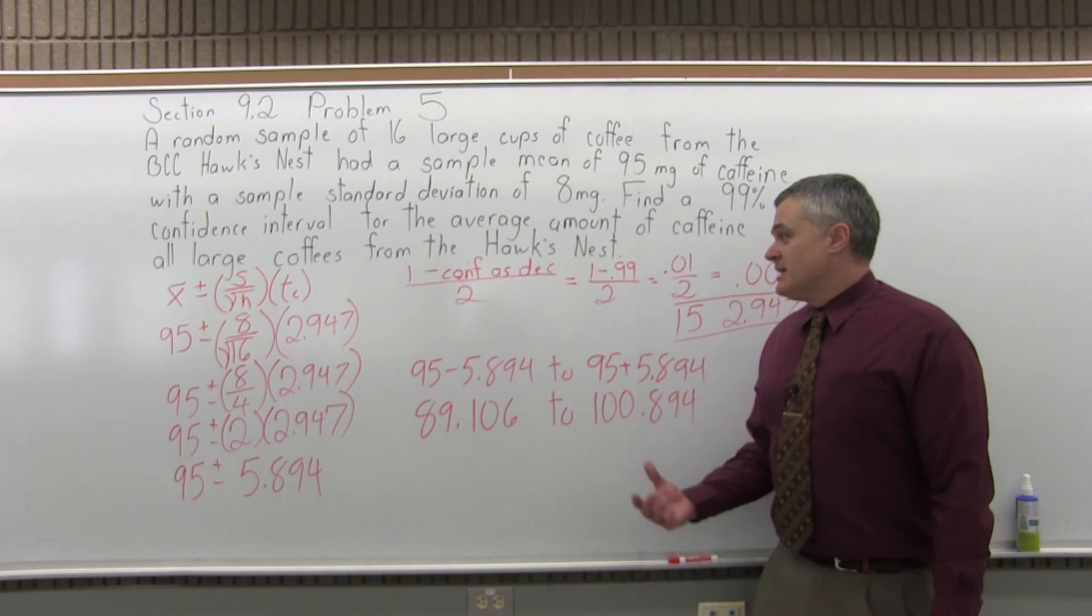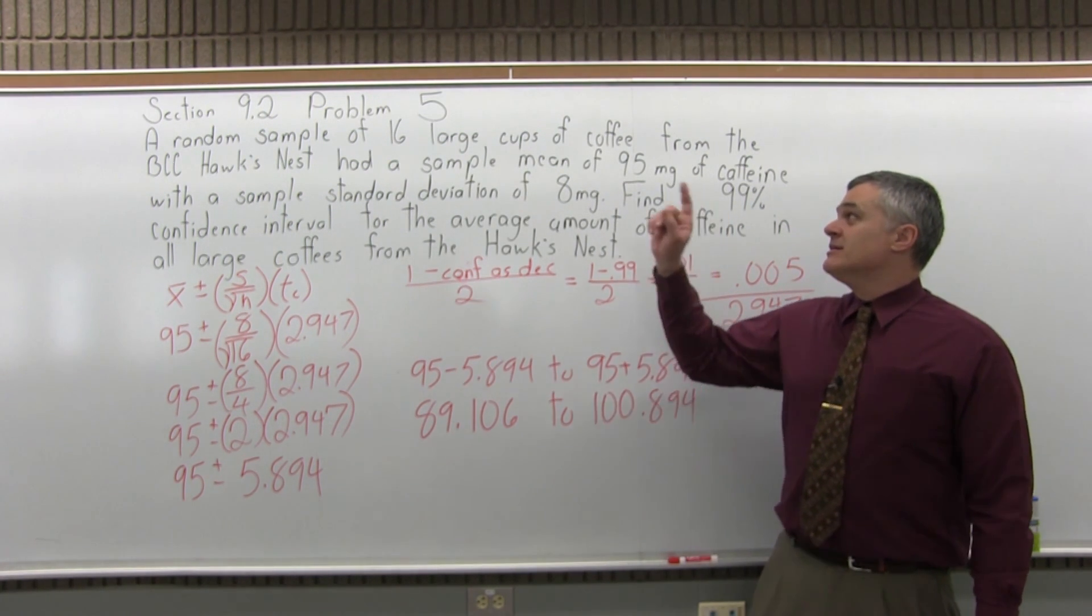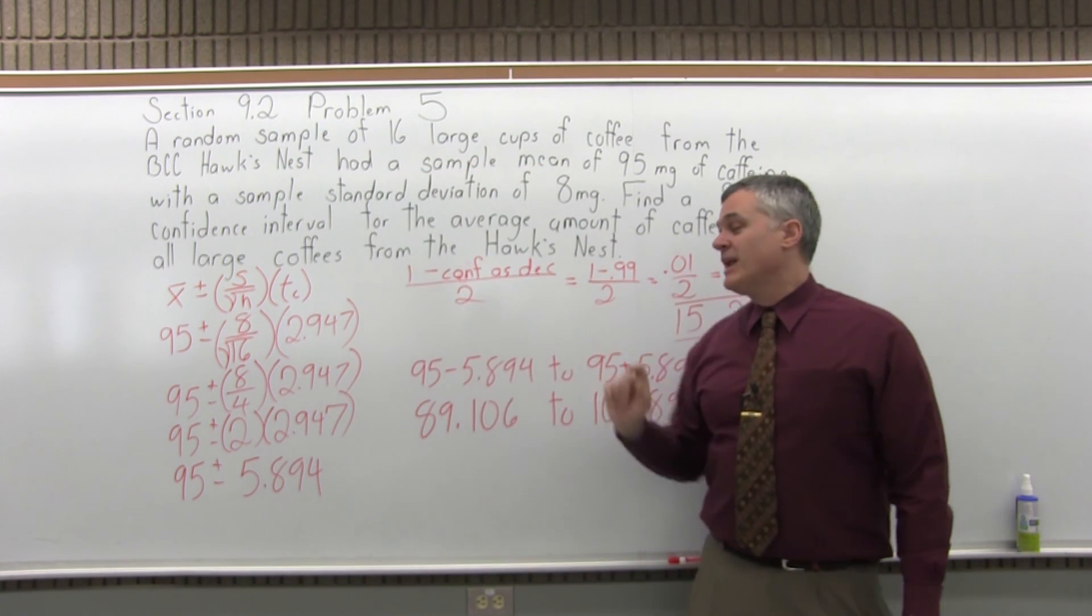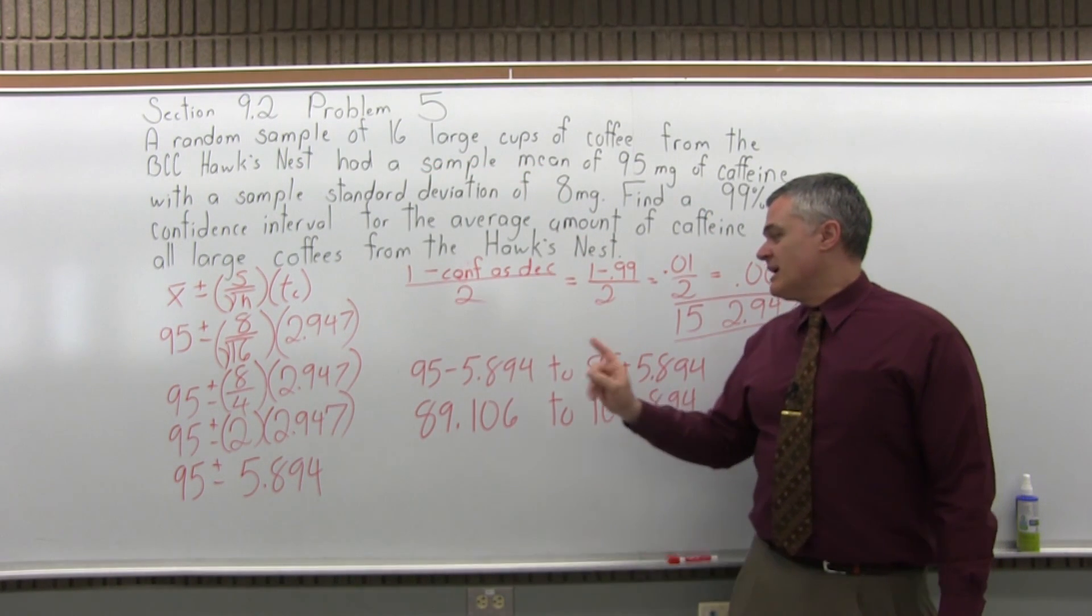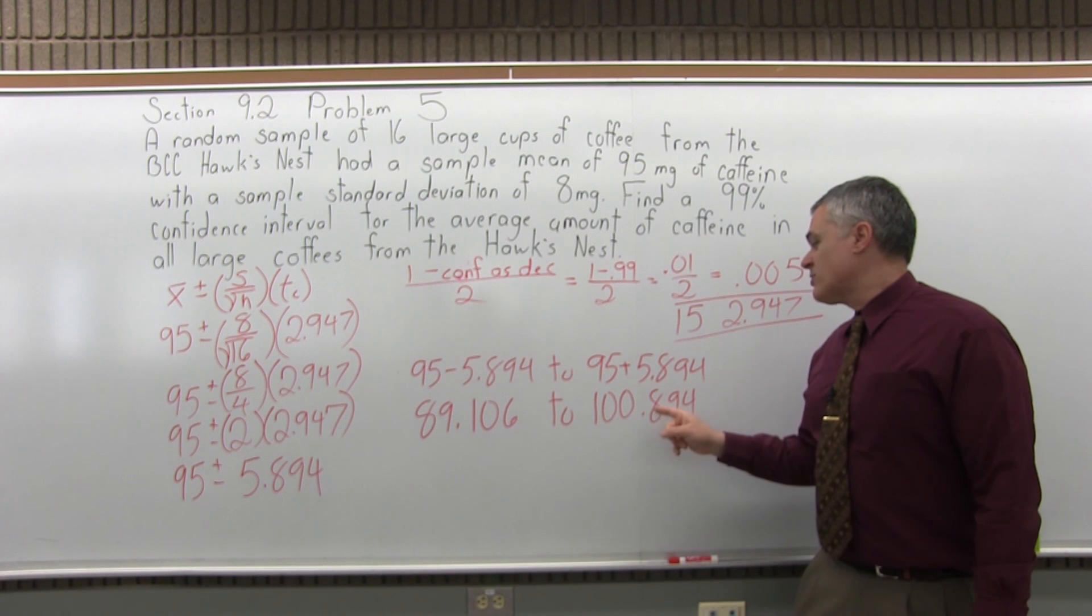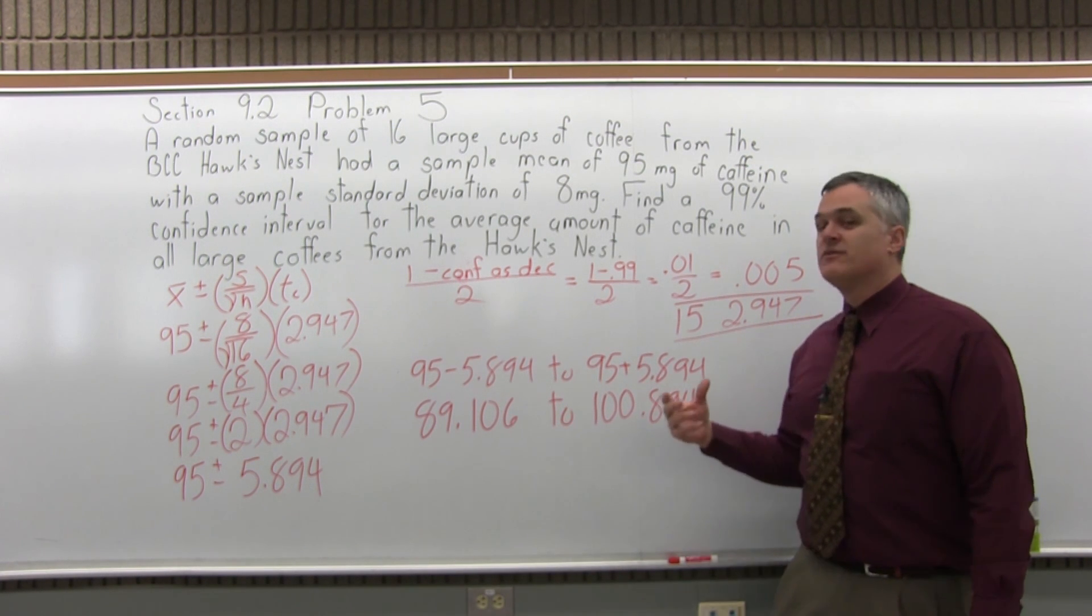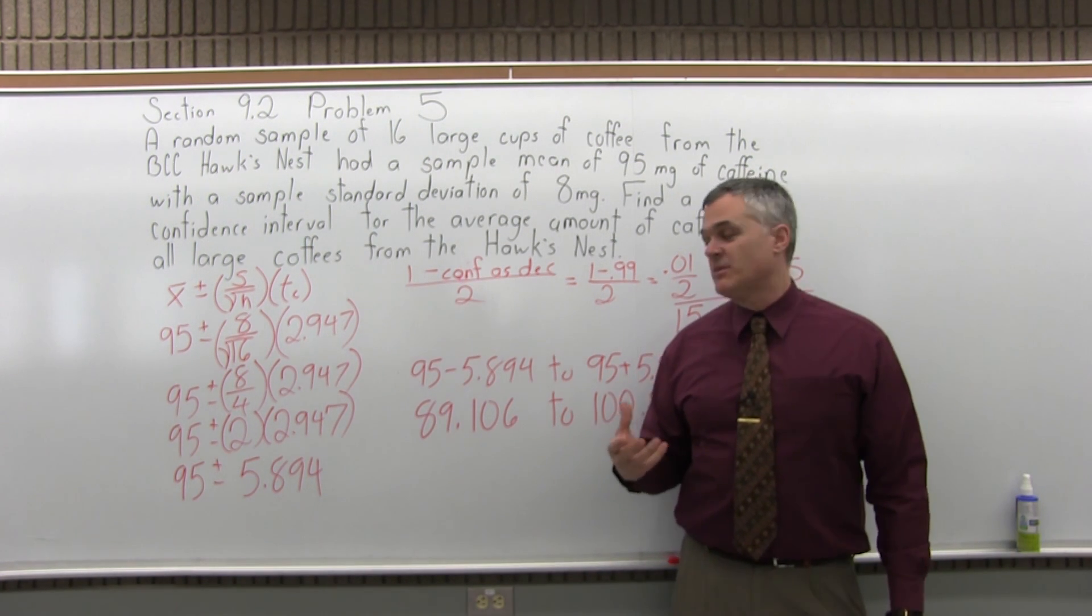So this tells me that based on only 16 cups of coffee that I sampled, I'm 99% sure that 89.106 to 100.894 is an interval where the true average of the amount of caffeine per large coffee can be found.